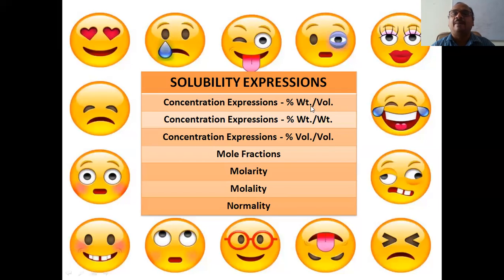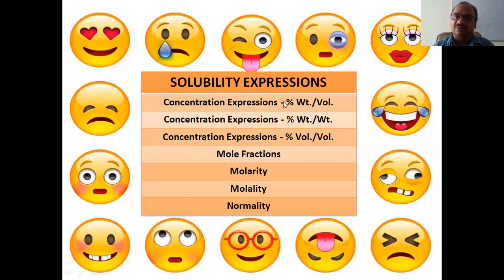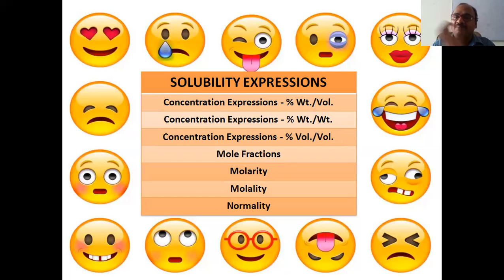The seven concentration expressions are: percentage weight by volume, percentage weight by weight, percentage volume by volume, mole fractions, molarity, molality, and normality. First we will see what is weight by volume, weight by weight, and volume by volume, then later we will see what is the percentage, and also mole fractions. These are five plus two — seven methods in total.